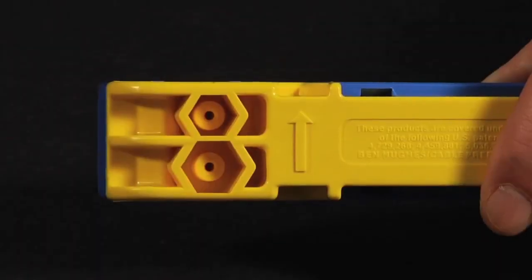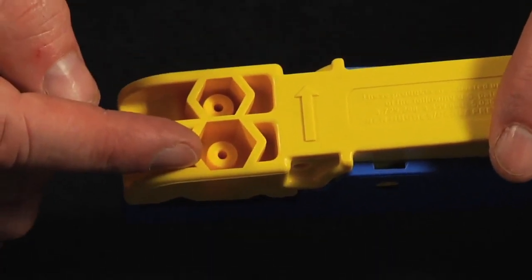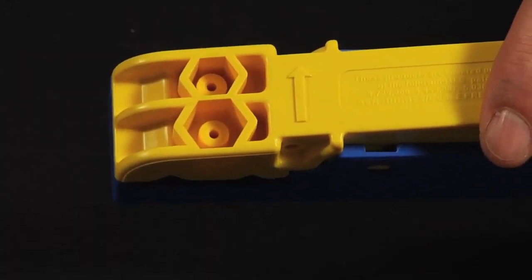On the underside of the CPT is a convenient connector insertion tool for RG6, 59, 7, and 11 connectors.